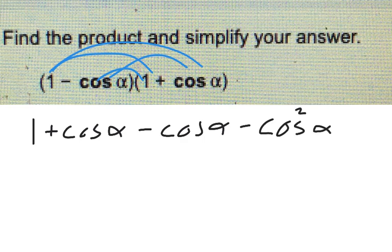And so plus cosine of alpha minus cosine of alpha, those cancel. And I'm just left with 1 minus cosine squared.